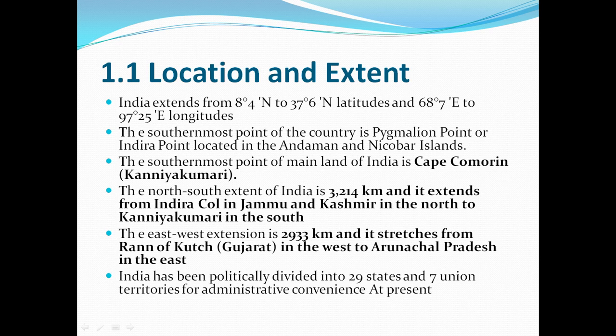The north-south extent of India is 3,214 km. It extends from Indira Col in Jammu and Kashmir in the north to Kanyakumari in the south.